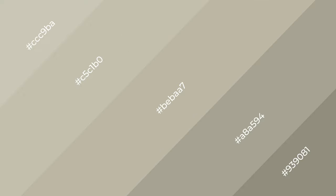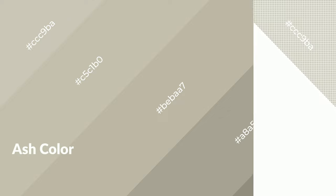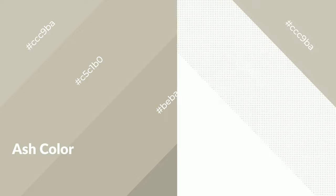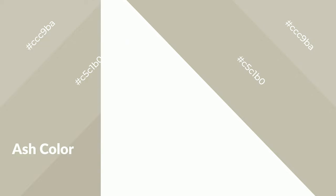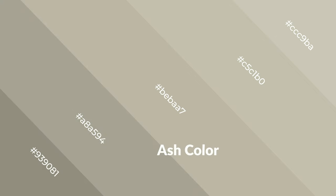Ash is a warm color and it emits cozier and active emotion. Warm colors are symbols of warmth, fire, heat, and sunshine. They also evoke joy, passion, love, and even anger. You can see warm colors used in restaurants and gyms.